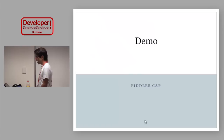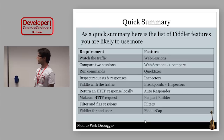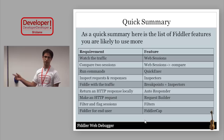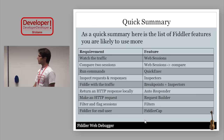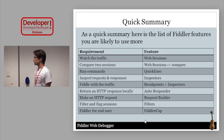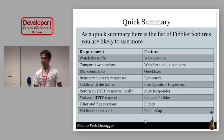Quick summary: to watch traffic use Web Sessions; to compare sessions, select two and right-click Compare; to run commands use the Quick Exec box; to see available commands type 'help'; to inspect requests and responses use Fiddler Inspectors; to change traffic on the fly set breakpoints and use Inspectors; to return a local response use Autoresponder; to make an HTTP request use Request Builder; to filter and flag sessions use Filters; and to give end users a simplified capture tool, send them Fiddler Cap.